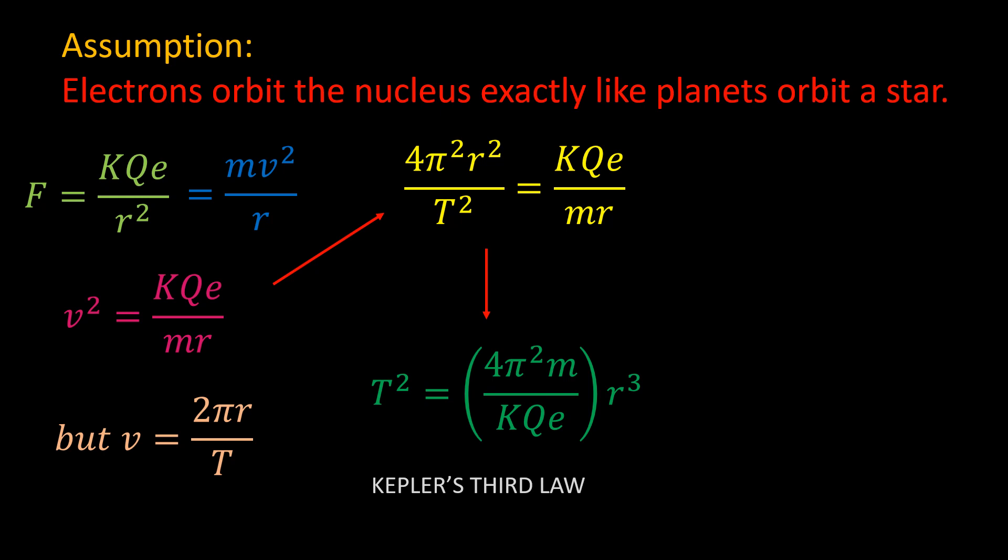The angular momentum of this electron is given by L equal to MVR. And since V is equal to 2 pi R over T, we have L equal to this. Taking T from Kepler's third law and subbing it here gives L equal to the square root of this over 2 pi.